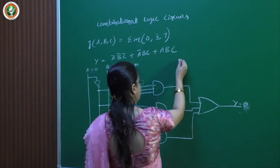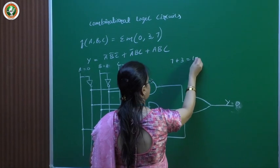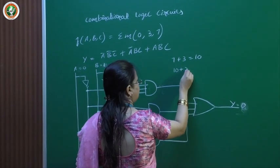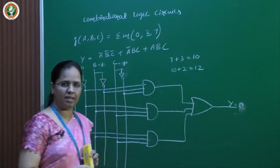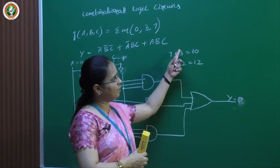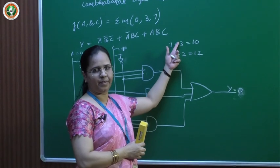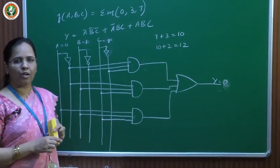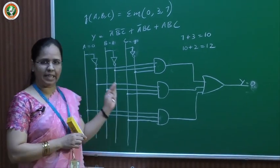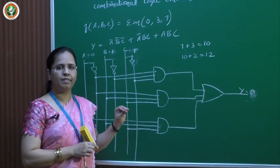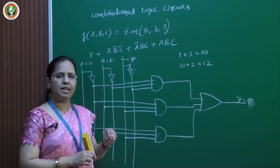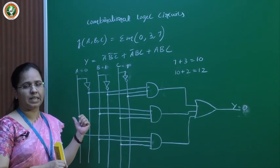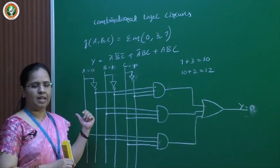For example, when using a calculator, if I perform 7 plus 3, I get the answer 10. Next, if I perform 10 plus 2, I get the answer 12. Obviously, this output does not depend on what previous values we added — it depends only on the present values of inputs. So combinational logic circuits are nothing but a collection of gates arranged in some manner to perform a particular task, where the output depends only on the present values of input.